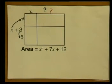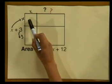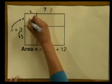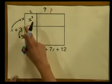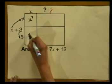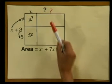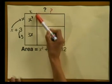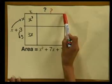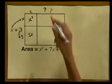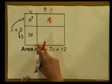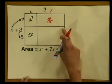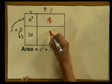Let's now fill in what we know. We know the area of two of the rectangles. The area of this square is x times x, which is x squared. And the area of this rectangle would be 3 multiplied by x, which gives us 3x. Now, what do we know about this rectangle? We know the length is x, but we are multiplying by an unknown length, so we don't know its area — let's call it a star. And for this rectangle, we know this length is 3 but also have an unknown length, so let's call it a triangle.